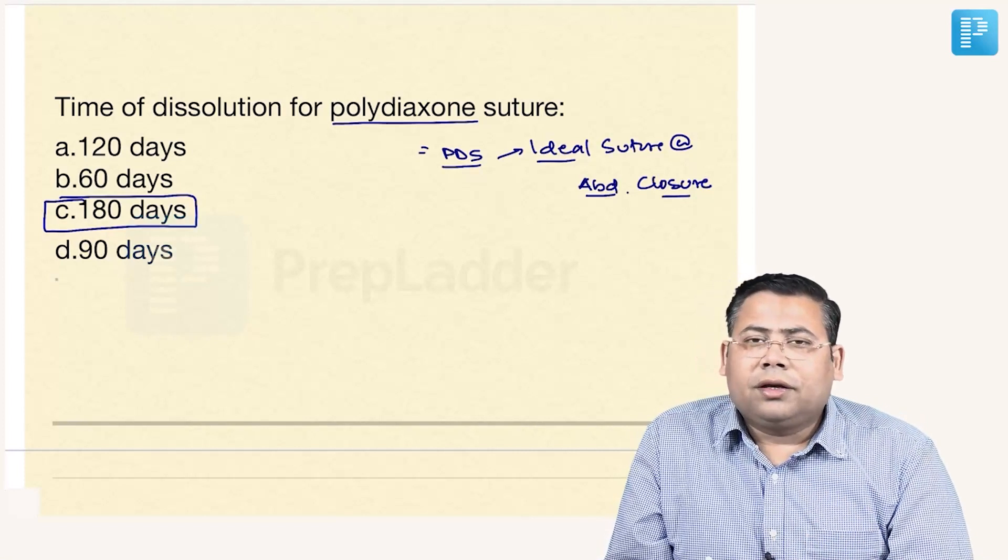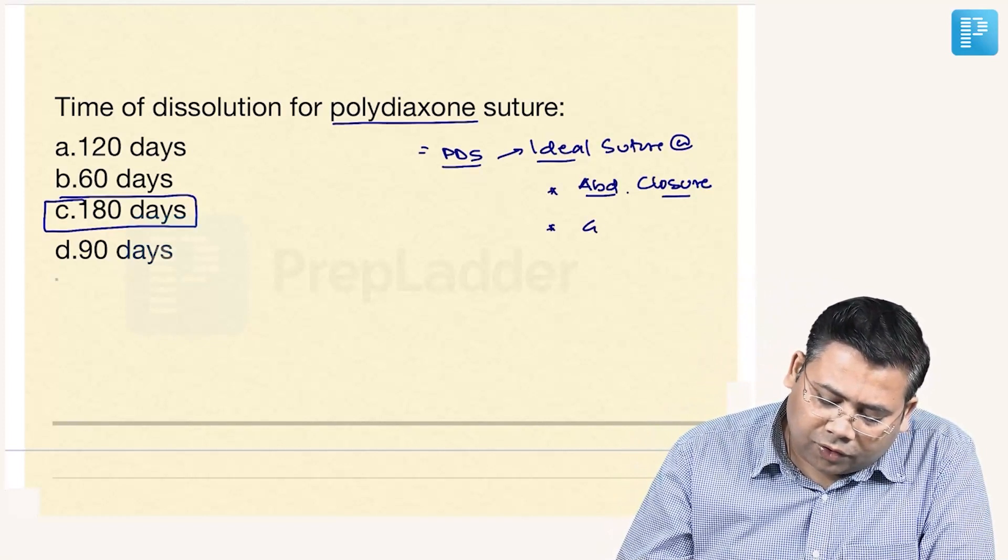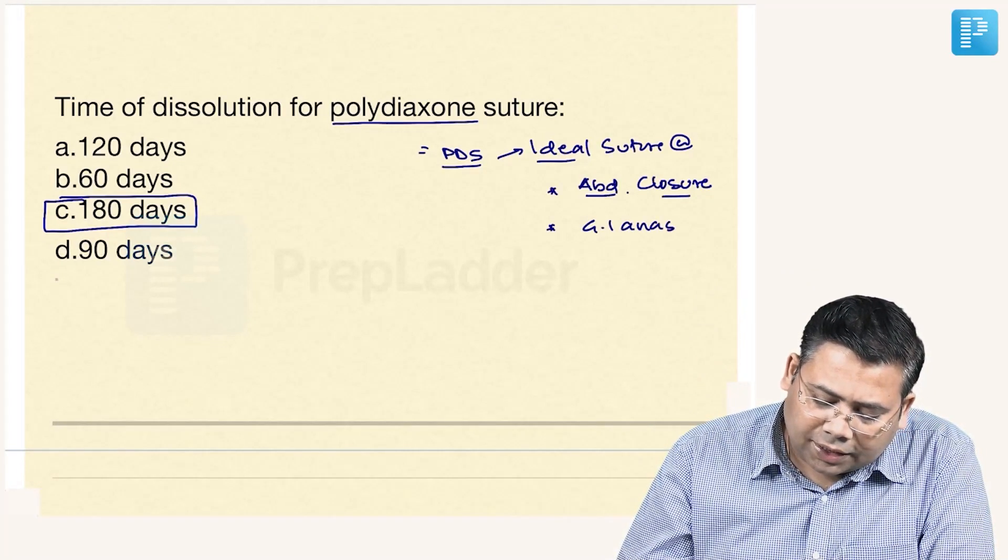The advantage is that there is no granuloma formation with this. Then it is also ideal suture for GI anastomosis also, gut anastomosis.